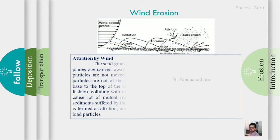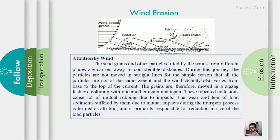The last process of wind erosion is attrition. In attrition, particles moving at different speeds strike each other. The process reduces grain sizes through particle-to-particle collision. This is the main wind erosion process.